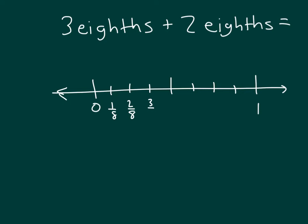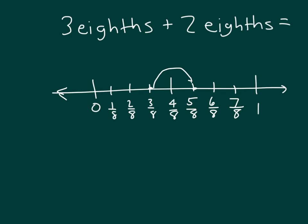Zero, one-eighth, two-eighths, three-eighths, four-eighths, five-eighths, six-eighths, and seven-eighths. Looking at our addition problem — in addition, we're working from left to right, where we start at three-eighths. Our equation is saying three-eighths plus two-eighths, so we're moving to the right on our number line: plus one-eighth, and plus two-eighths. We'll mark that on our number line, draw our arrow indicating that we're adding two-eighths, and circle where we ended up. So three-eighths plus two-eighths does equal five-eighths.